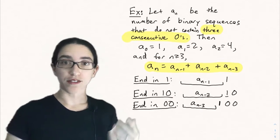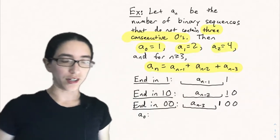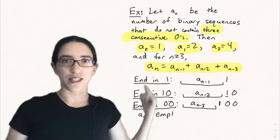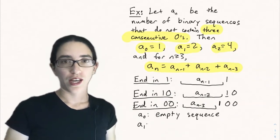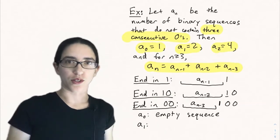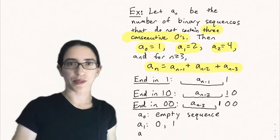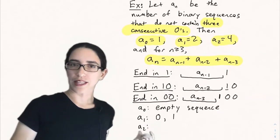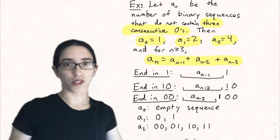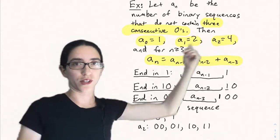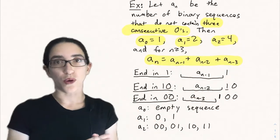Now let's look at the initial conditions. We have a depth 3 recurrence, so we need three initial values: a_0, a_1, and a_2. a_0 is the number of sequences of length 0 with no three consecutive zeros — just the empty sequence, so a_0 equals 1. a_1 counts length-1 sequences: both 0 and 1 are fine, so a_1 equals 2. For a_2, you can never have three consecutive zeros in a length-2 sequence, so all four binary sequences are valid and a_2 equals 4.